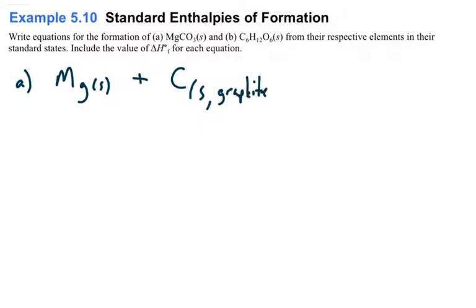And then the final element is going to be oxygen, and that one's diatomic. So you put O2, you put a gas, and then what you're going to do is you're going to equal it to the product, which is magnesium carbonate. Now, notice it has to equal to one mole. So you're not allowed to touch the product. The product has to stay as one mole.